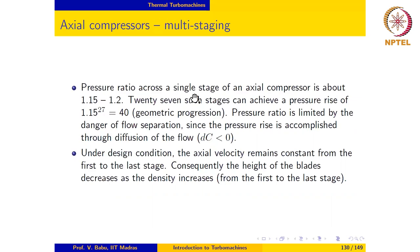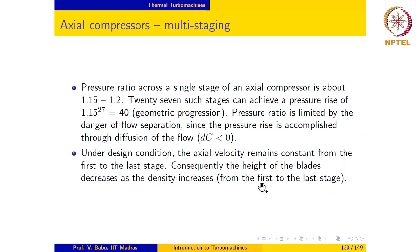A typical pressure ratio across a single axial compressor stage is about 1.15 to 1.2 in modern gas turbine engines. To achieve an overall pressure ratio of 40, approximately 27 stages are needed since pressure increases in geometric progression. Axial compressors are also designed so that axial velocity remains as constant as possible from first to last stage; consequently, blade height decreases as density increases from the first to the last stage.